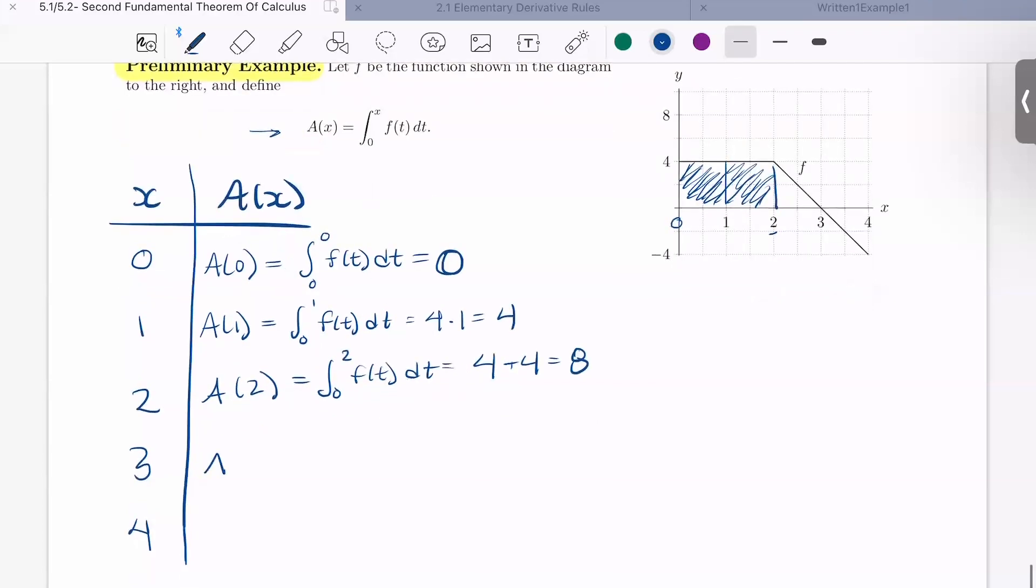All right. Let's finish these last two. a of 3 is equal to the integral from 0 to 3 of f(t) dt. And we can even write that, as we've seen with properties of integrals, the integral from 0 to 2, f(t) dt, which we already figured out, plus the integral from 2 to 3, f(t) dt. So we know the first part of that area here is going to be 8. So now we just have to compute the area under the curve from 2 to 3. So we have 8 plus we have a triangle here with a height of 4 and a width of 1. So we have 1 half, base of 1, height of 4, which becomes 8 plus 4 over 2, which is 8 plus 2, which is 10.